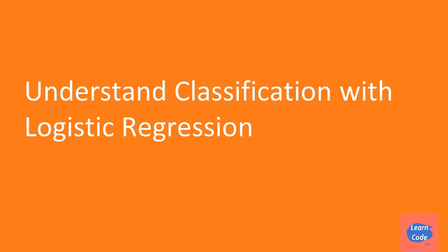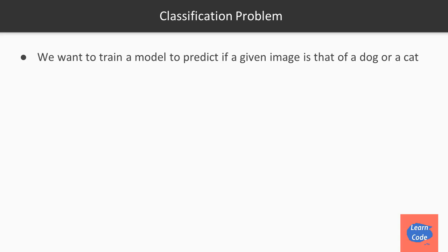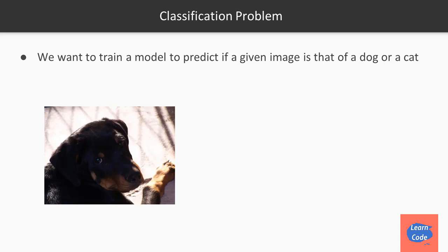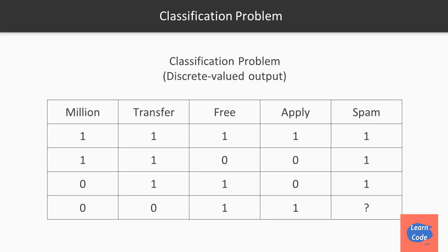In this video on understanding classification with logistic regression, we are going to look at what is a classification problem, the hypothesis function, logistic regression, the cost function, and how we apply gradient descent in classification. Let's understand classification with an example — we want to predict if an image is a dog or a cat. We use labeled training data to tell the supervised learning algorithm which image is a dog and which is a cat, so it can predict on new images. Identifying whether an email is spam is also a classification problem.